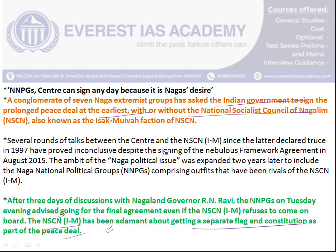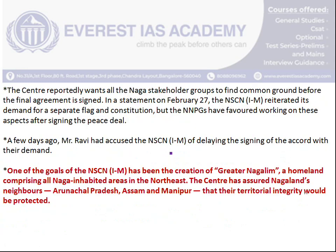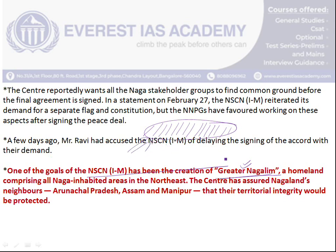The Nabla group's basic demand has always been to create a Greater Nagalim — a separate territory for Naga people including those residing in neighboring states. This Greater Nagalim would include parts of Arunachal Pradesh, Assam, Manipur, and even some parts of Myanmar. Since they are asking for another country's territorial area as well, the Indian government is not accepting their terms and conditions.